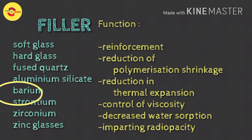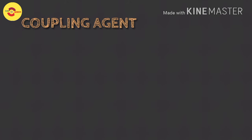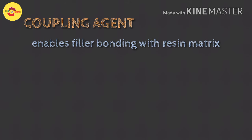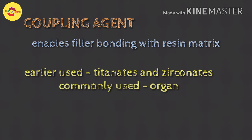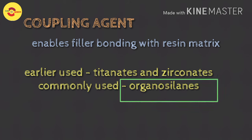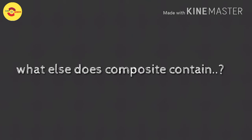Moving on to the third main component — the coupling agent. It is essential that the filler particles be bonded to the resin matrix. The materials used as coupling agents were earlier titanates and zirconates. More recently, organosylanes such as gamma-methacryloxypropyl trimethoxysilane are most commonly used.